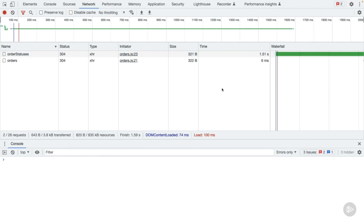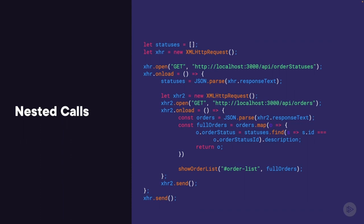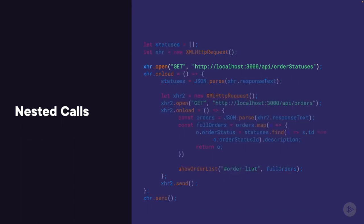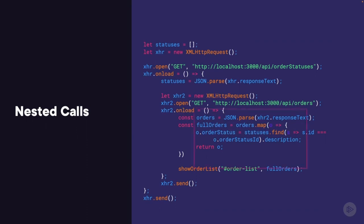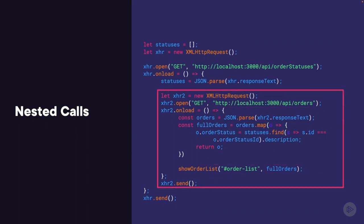The code had to be changed to ensure the correct sequence. Looking at the code on screen, once again we have an XHR fetching order statuses and a second XHR fetching orders. There's a slight difference though: our xhr2 is defined inside the xhr.onload function — the function that gets called when our request succeeds. In this code block, we don't even try to make the request for orders unless and until we have the data for order statuses. However, it comes at a cost: the second call is now buried inside the success of the first.